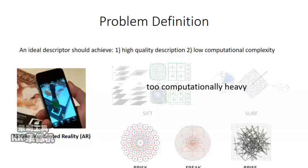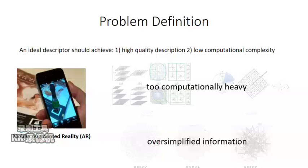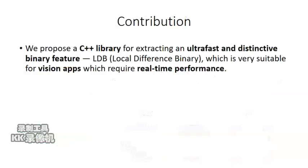Binary features are more suitable for mobile device, but they only utilize the intensities of a subset of pixels for binary tests. So they have low discriminative abilities. Our goal is to combine the complementary advantages of these features.